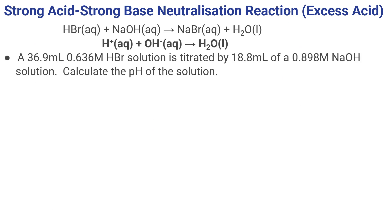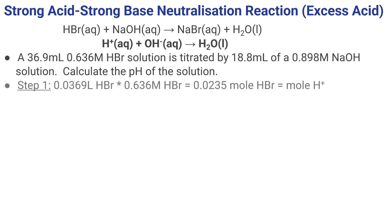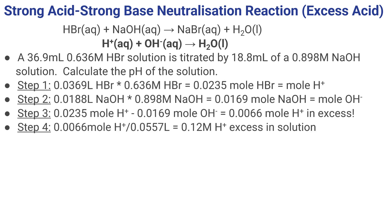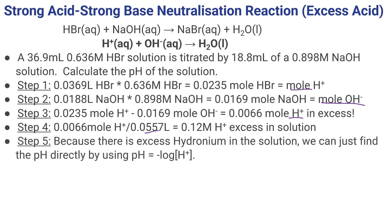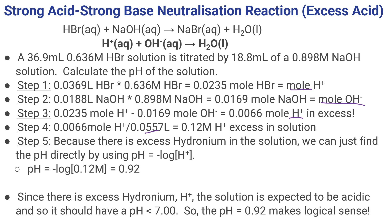Same reaction, same net ionic equation, same strong on strong, but different volumes and different molarities. Follow those five steps. Multiply volumes times molarities — you can see you have more moles of H than moles of OH this time, so a slightly acidic solution. Subtract moles of OH from moles of H and you have moles of H+ in excess. Divide by the total volumes — 36.9 + 18.8 — keeping three sig figs gives a molarity of 0.12 M H+. Because this is an acid I go right to pH: negative log of 0.12 gives a pH of 0.92. This is a strong acid, so pH less than 7.